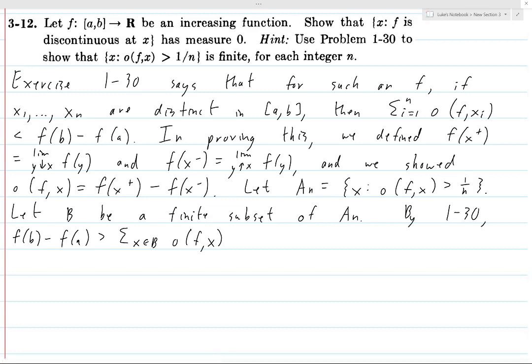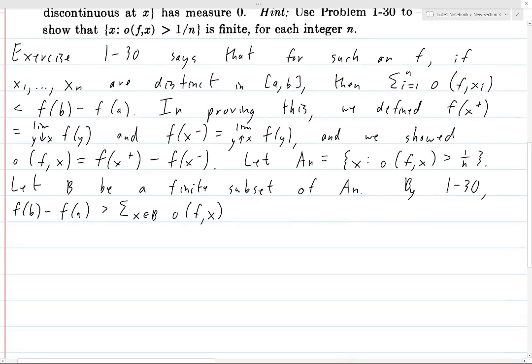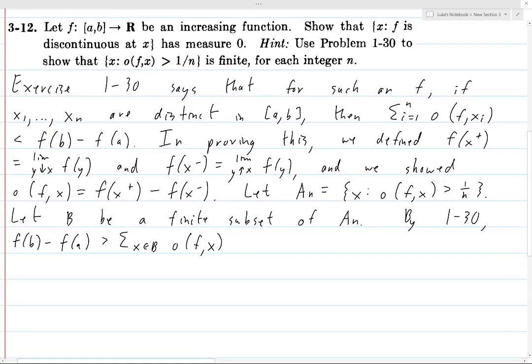And so that inequality from exercise 1-30 applies. But now if we look at this, the oscillation of f at x is always going to be greater than 1 over n, just because all the x's are in B, which is a subset of An.